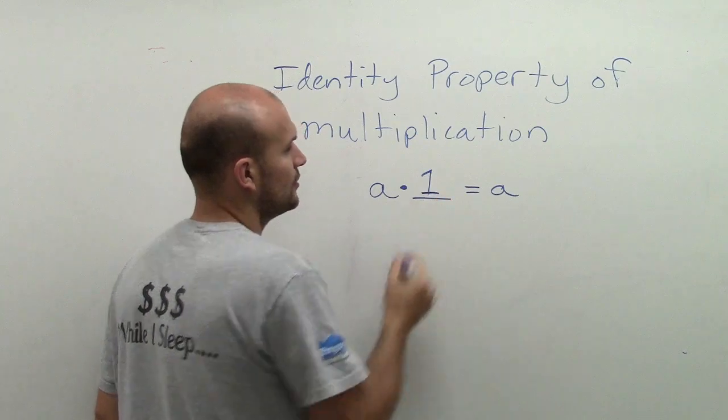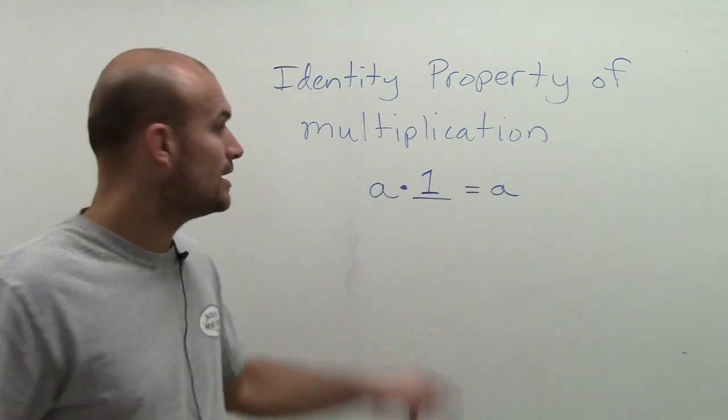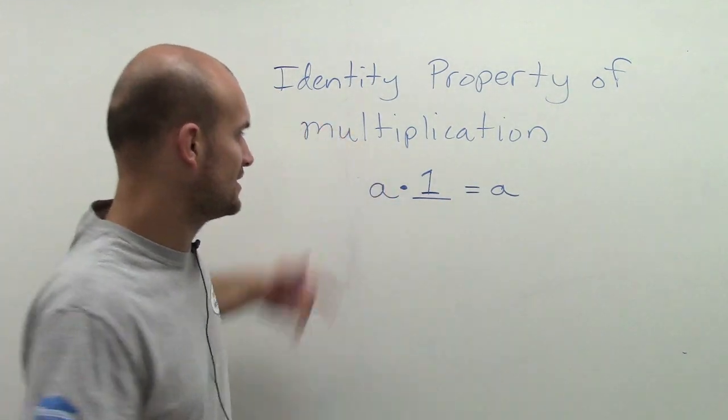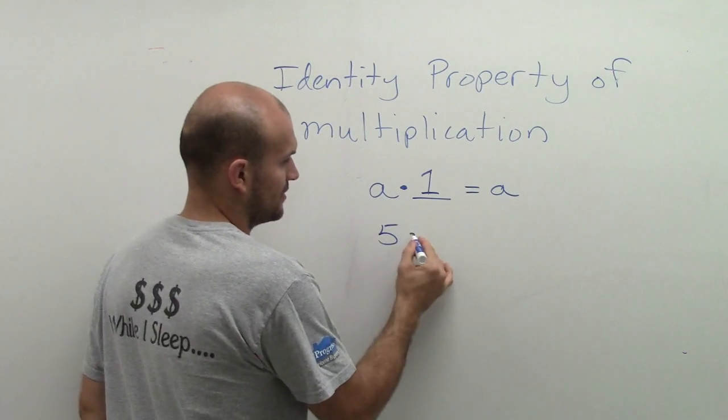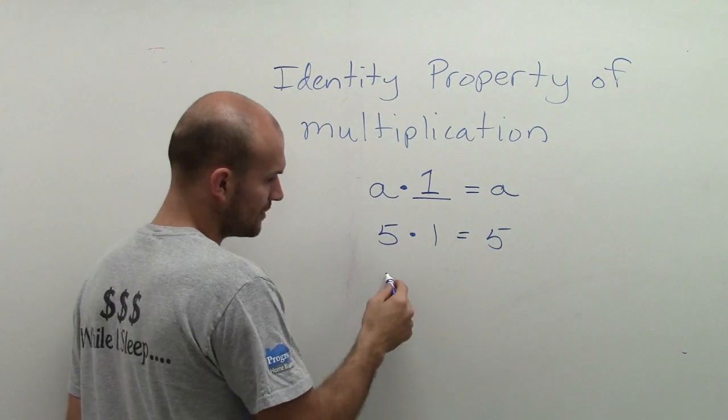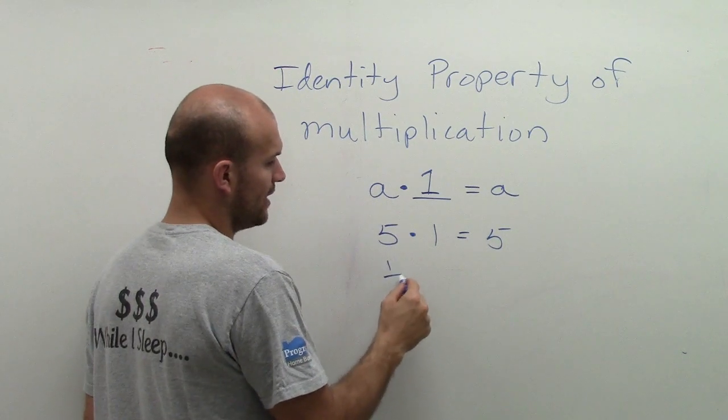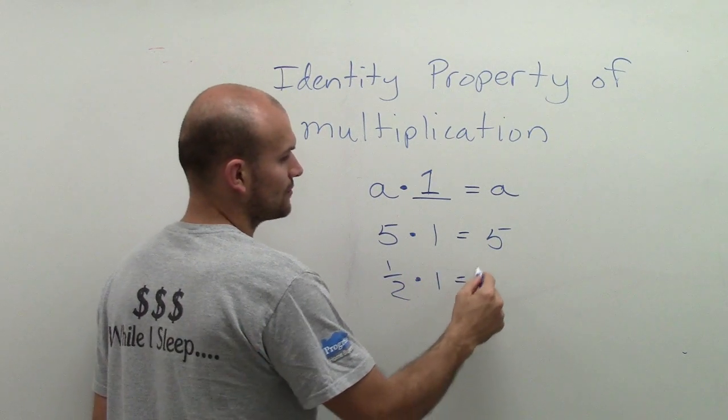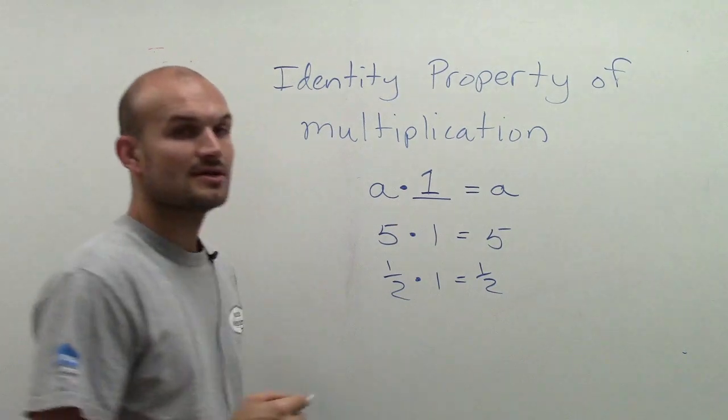Well, when we think about that, the only number we can think of is multiplying by one. Let's look at some examples: five times one equals five, one half times one equals one half.